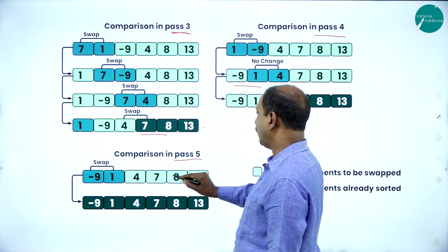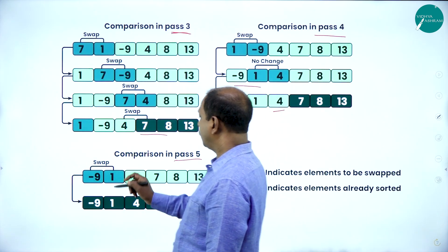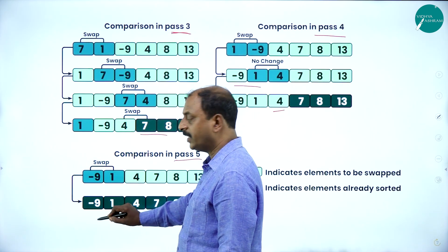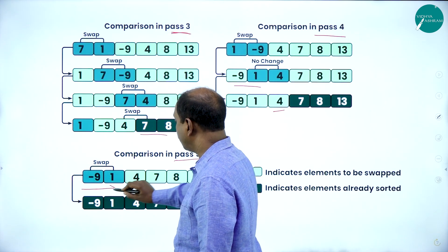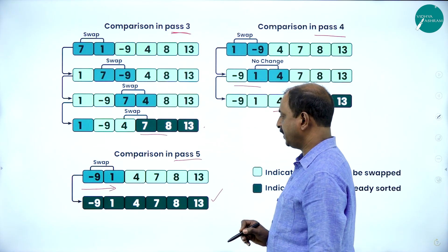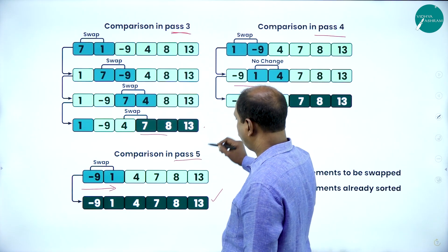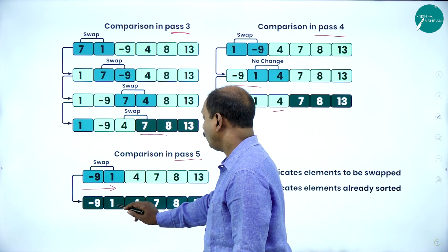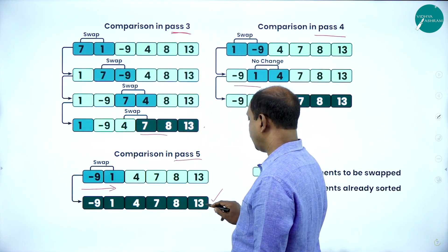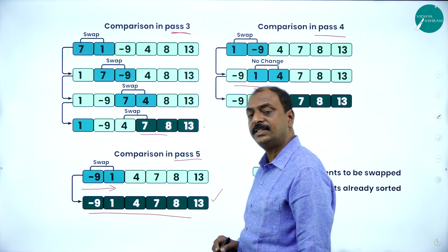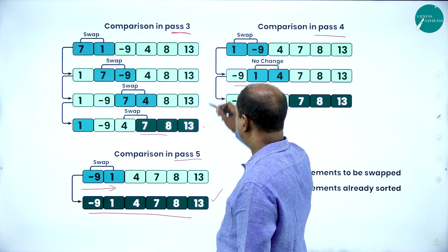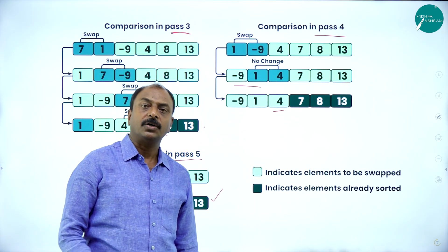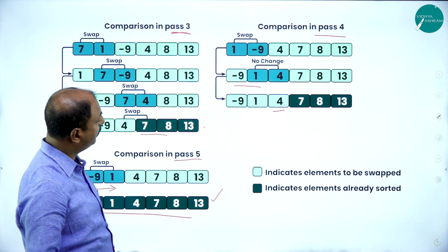After pass 5, if you observe the list, it is minus 9, 1, 4, 7, 8, and 13. The elements are now sorted in ascending order. This is the technique or algorithm for sorting elements using bubble sort.